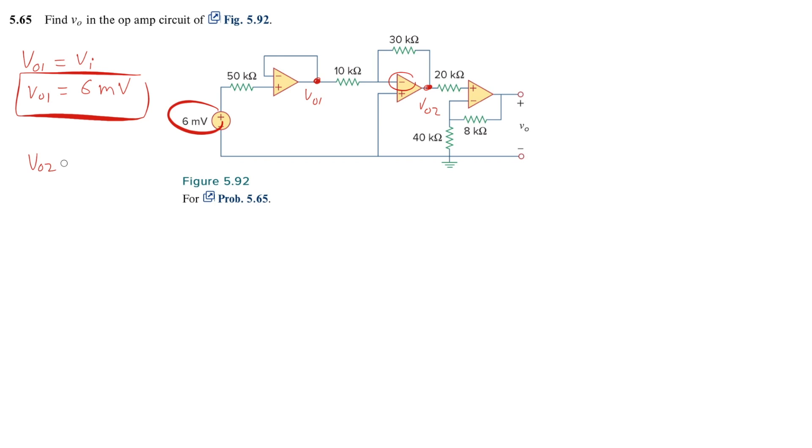So what is the relationship between the input and output? V out 2 is equal to minus RF over R₁ times VI which is what is the input here? V₀₁.